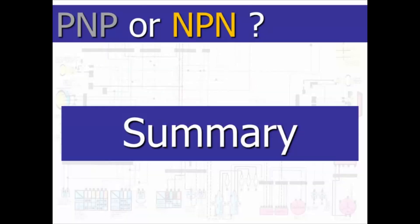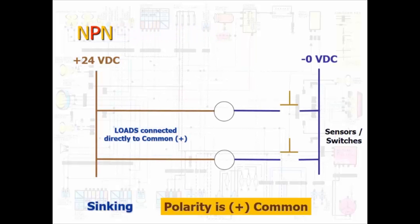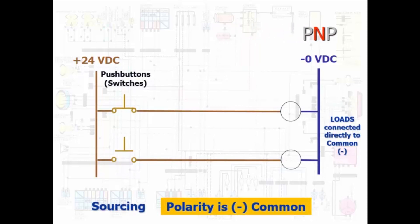So, for resolving NPN or PNP circuits, remember this. NPN has the loads directly connected to the positive common. The voltage must go through closed switches to sink from 24 to 0 volts. But PNP circuit loads are directly connected to the negative common. Voltage must go through the closed switches from the source to the negative common.